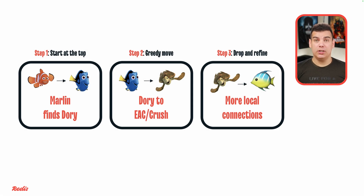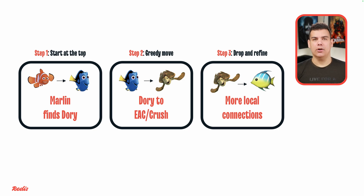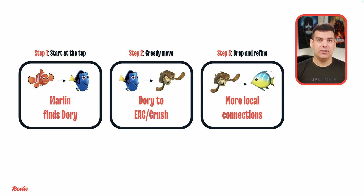Let's follow Marlin's journey to better understand HNSW's search algorithm. HNSW uses greedy search, starting from the highest layer. Marlin meets Dory, who exists in multiple layers. Dory is a good example of what we call a hub node, which connects different communities. The EAC represents the highest layer, with sparse but powerful connections spanning vast distances. When Marlin rides with Crush the turtle, he efficiently uses these long-range connections. When he reaches Sydney's vicinity, the algorithm drops to lower layers for refined search — sparse layers for coarse navigation, dense layers for precision.